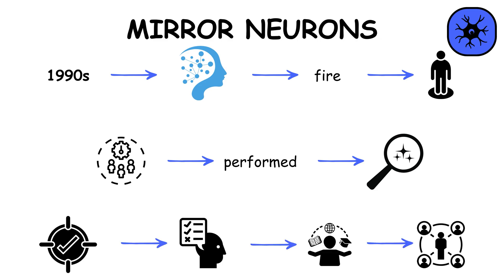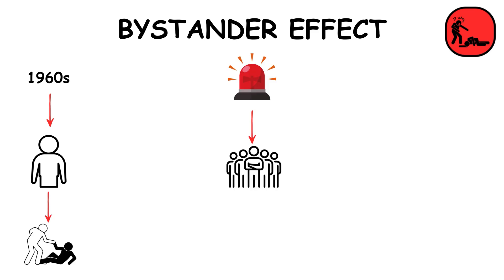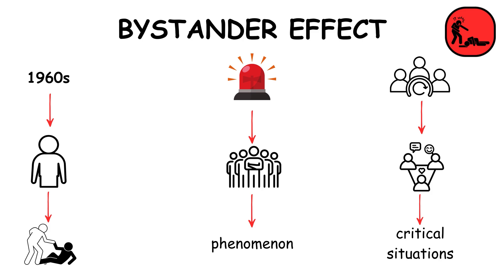The Bystander Effect, identified in the 1960s, observes that individuals are less likely to offer help in emergencies when others are present. This phenomenon highlights how group dynamics and social context influence individual behavior in critical situations.